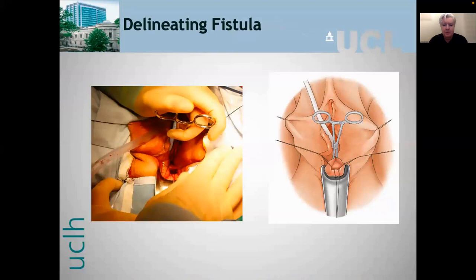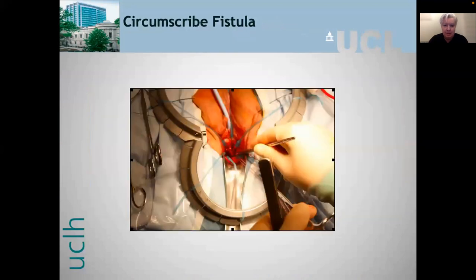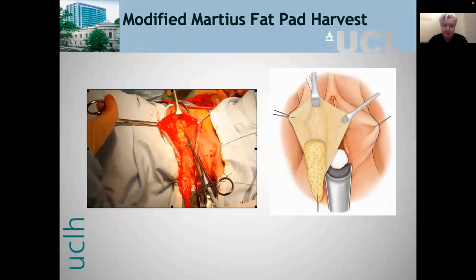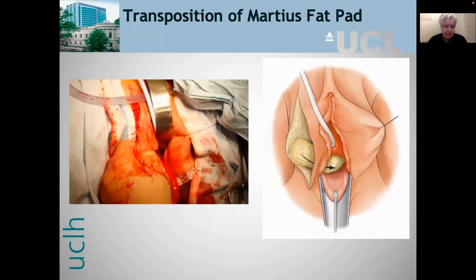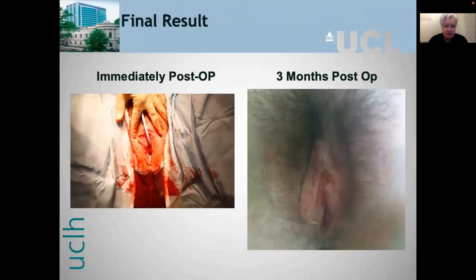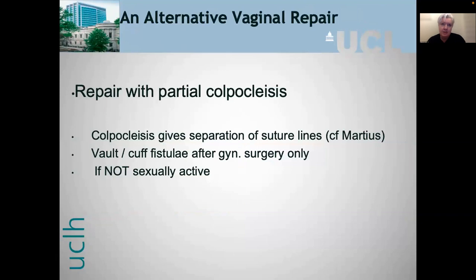Then closing the vagina — horizontally or vertically depending on how it wants to lie — avoiding narrowing the vagina. The labia is closed over a suction drain, fascia with 3-0 Vicryl and skin with a subcuticular Vicryl. The main steps are: delineate the fistula, circumscribe it, develop the plane between vagina and bladder, close the bladder aspect, transpose a modified Martius fat pad flap over the bladder closure, suture it, and close. Three months post-operatively the cosmetic appearance is excellent.